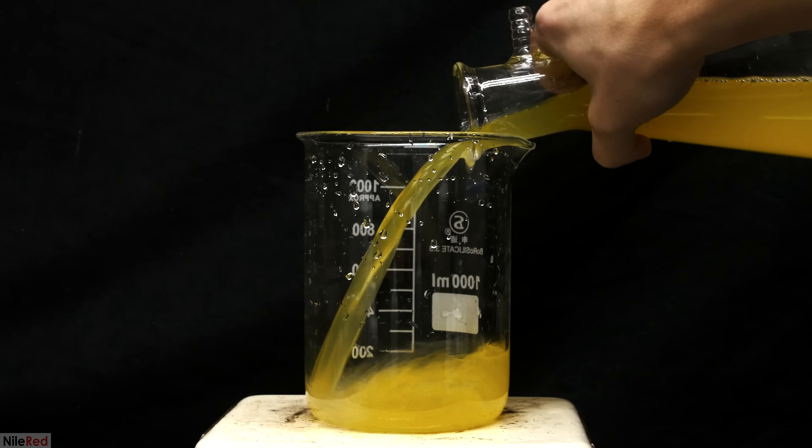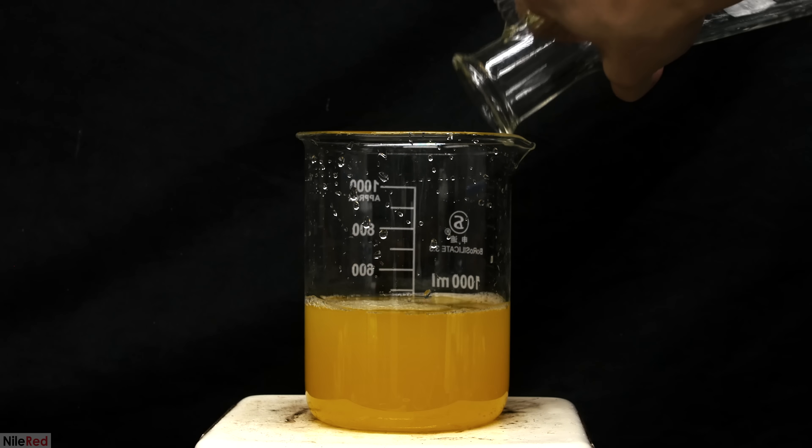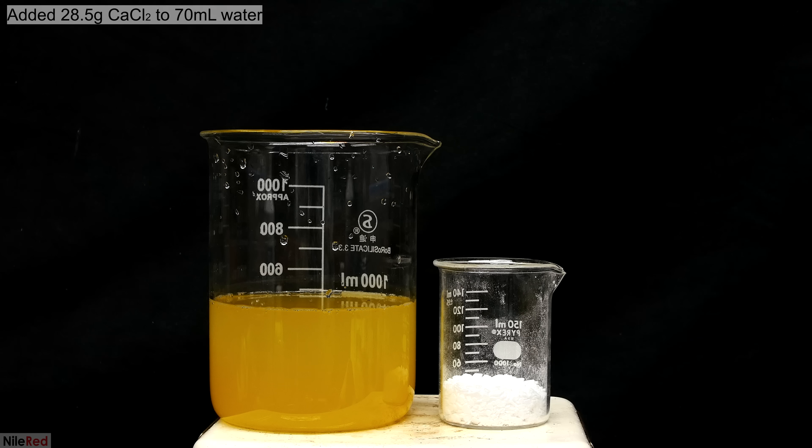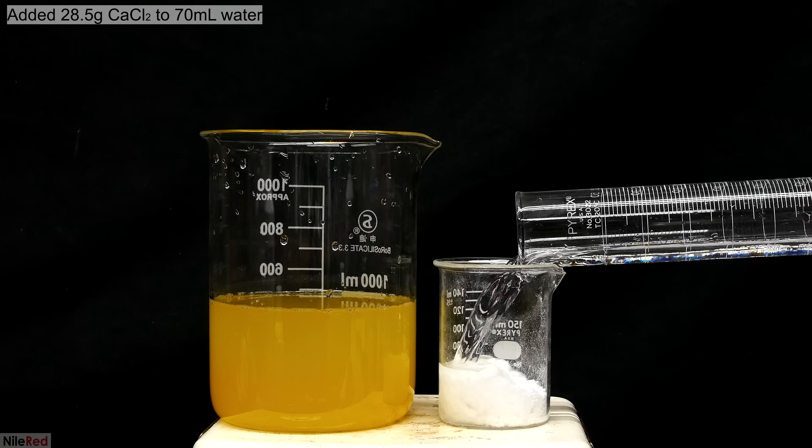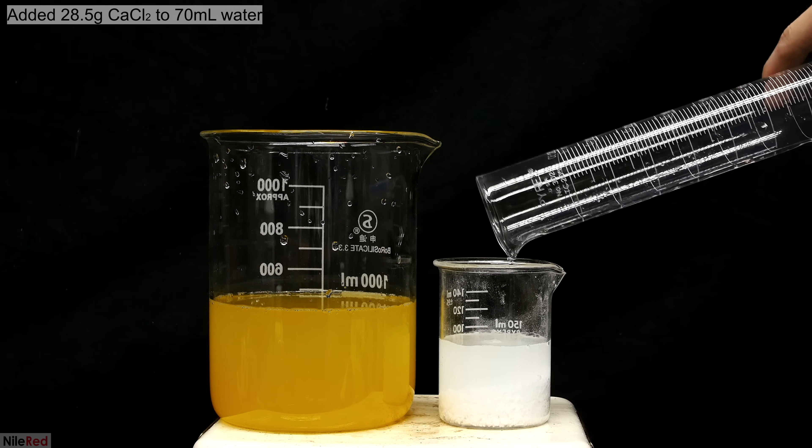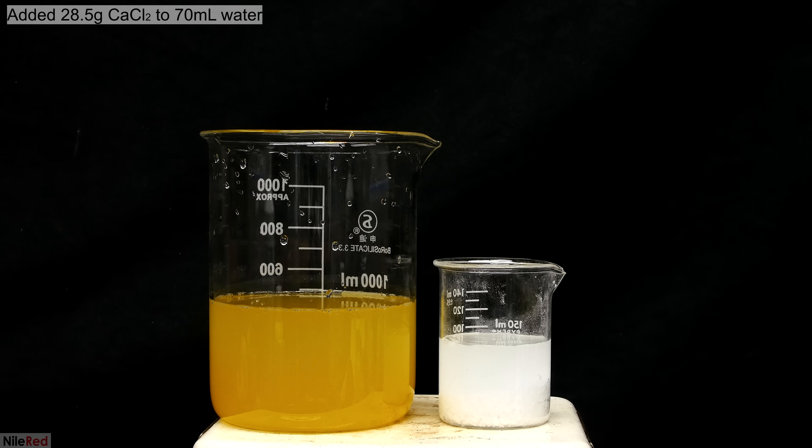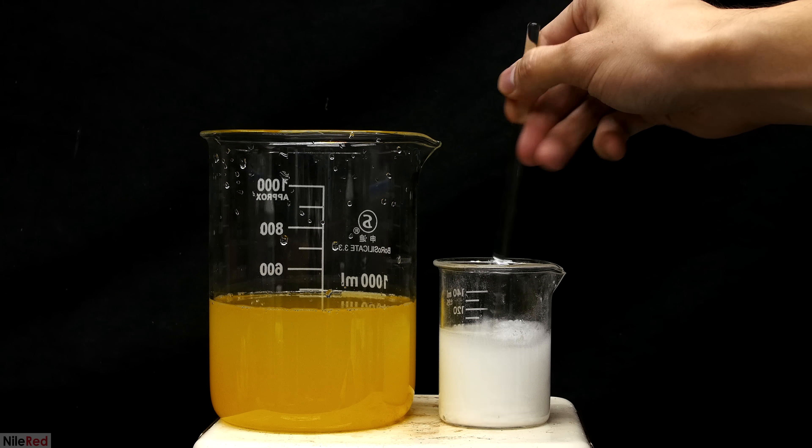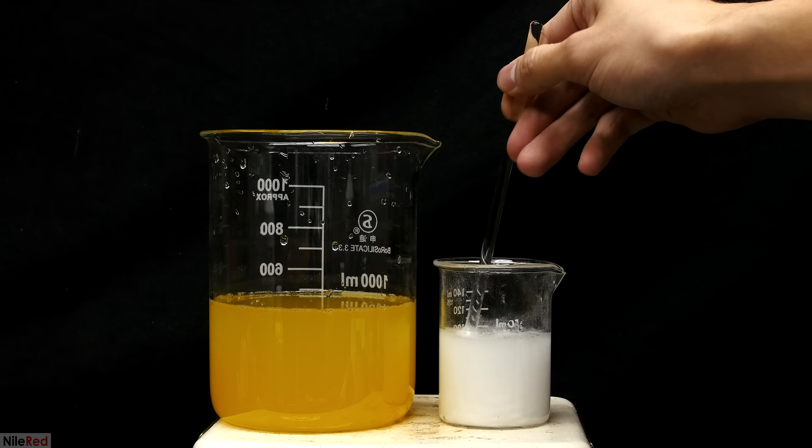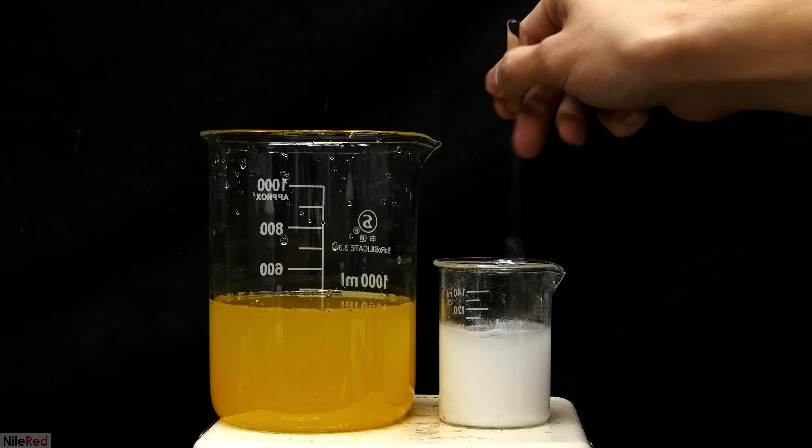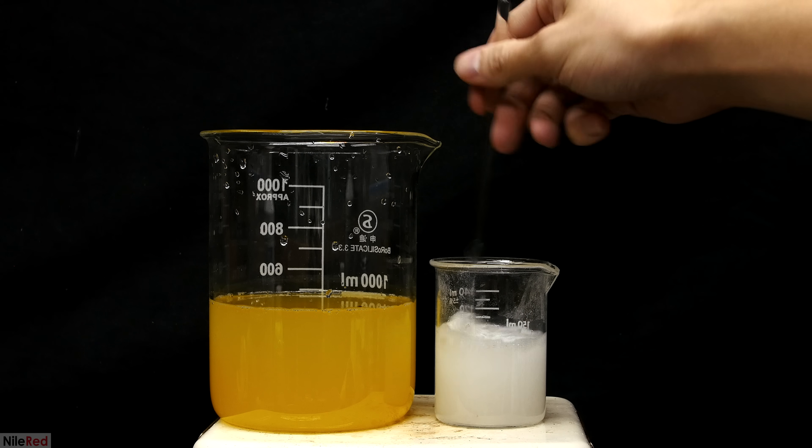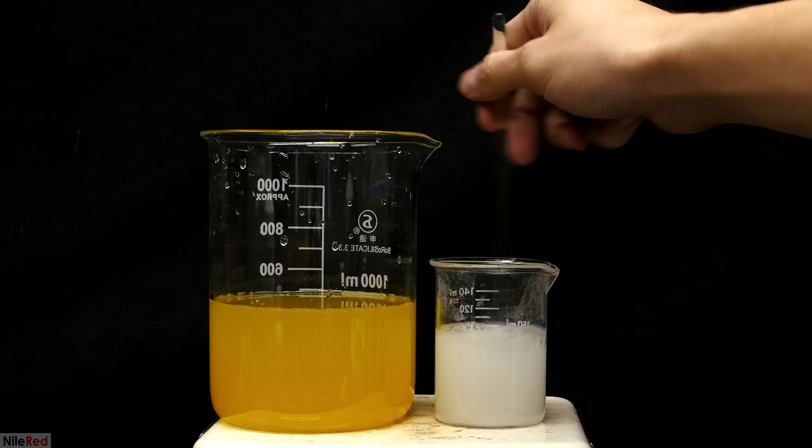Once it was done filtering through I transferred it to a clean one liter beaker. I weighed out 28.5 grams of calcium chloride and then I added about 70 milliliters of distilled water. Using a glass stir rod I mixed the calcium chloride until it completely dissolved. After mixing it for a few minutes it was still cloudy due to impurities.